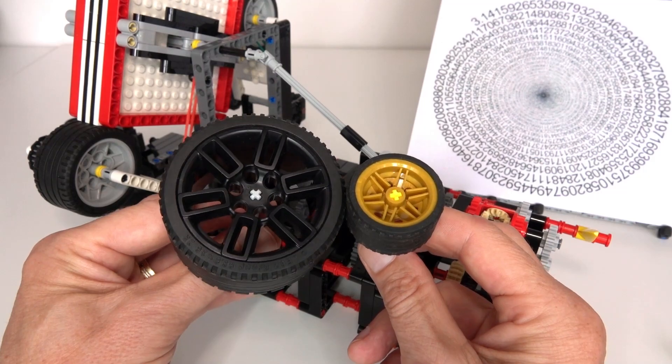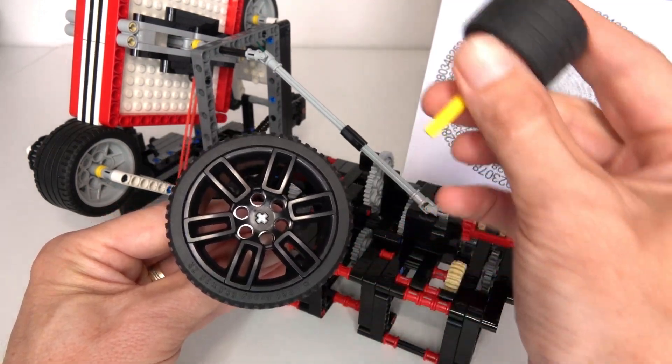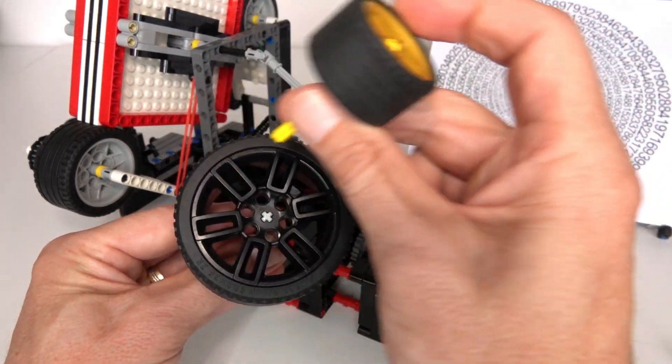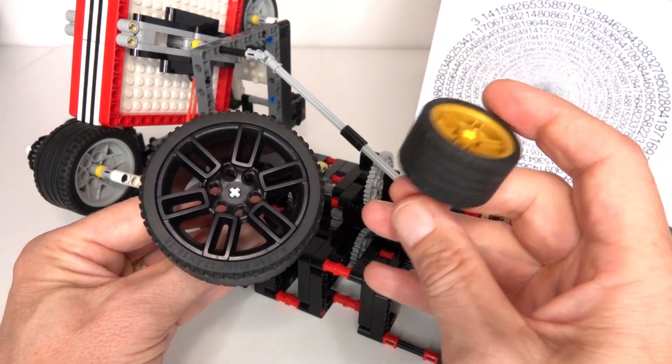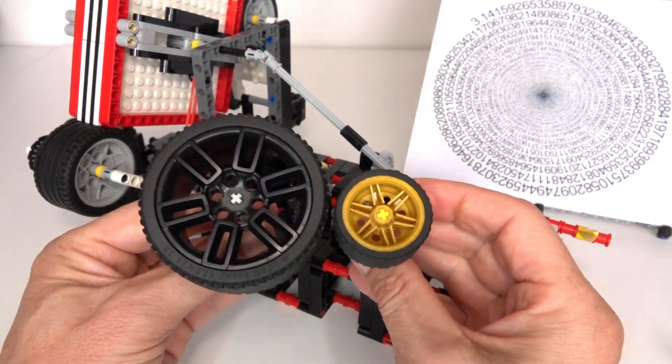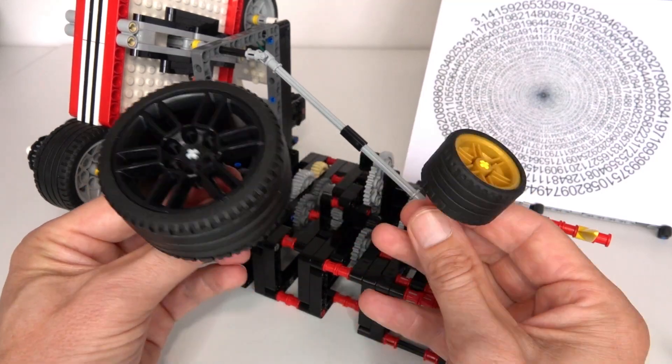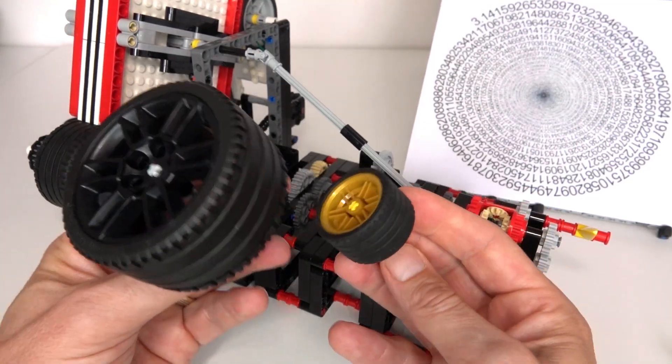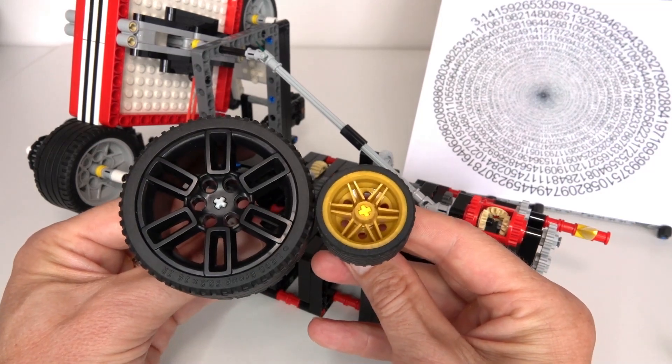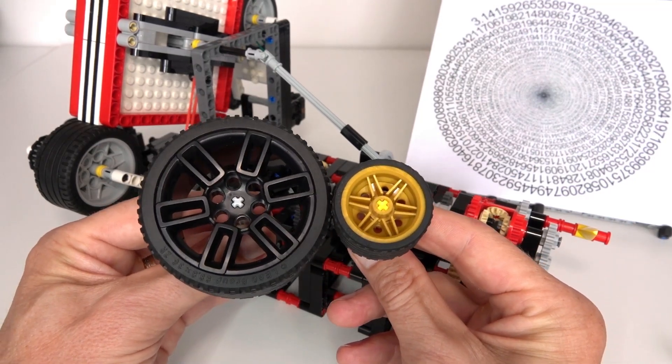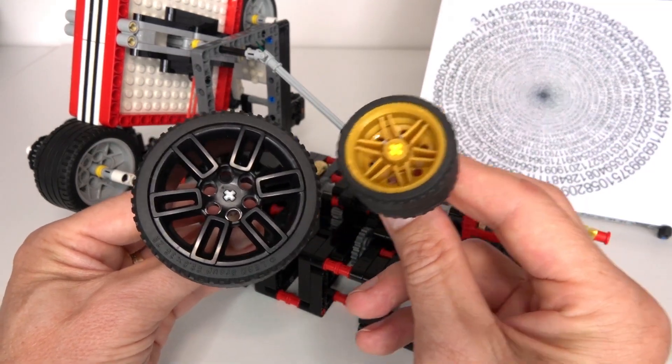If I want to create a gearing ratio of pi, I would need one wheel with a circumference of pi in some units and the other with a circumference of one. The problem is that both of these, using discrete Lego units, will both have a circumference of some factor of pi, and when you divide one by the other, the pis will cancel.